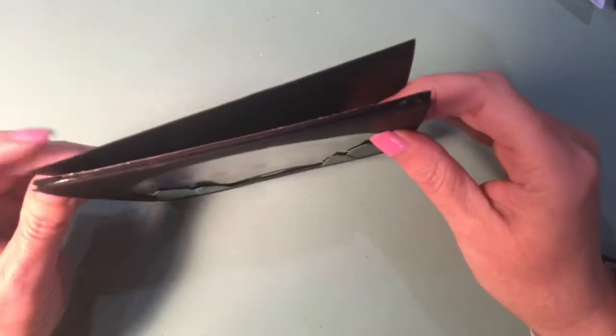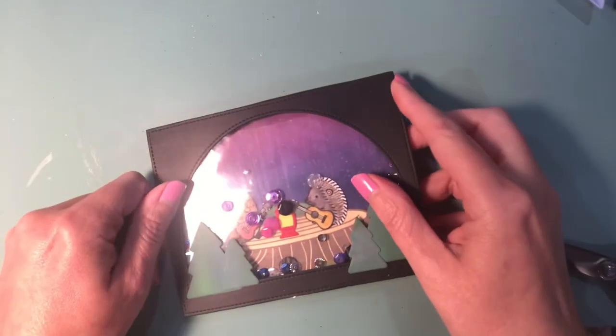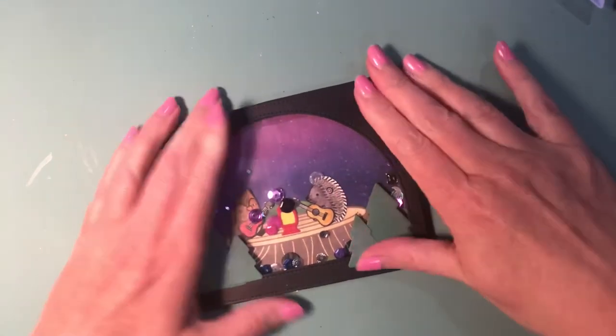But this is basically the end of the card. I'm taking my ATG and I am sticking it to a four and a quarter by five and a half inch black card base. And that is the shaker card, guys.